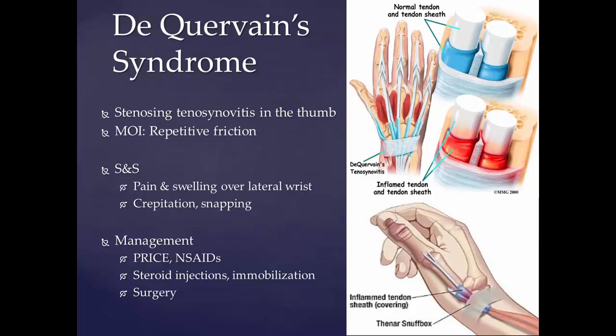The onset of De Quervain syndrome is often gradual. Pain is made worse by movement of the thumb and wrist, and may radiate into the thumb and forearm. Treatment includes managing pain through PRICE and NSAIDs, steroid injections, and immobilization. Surgery may also be used in this condition.